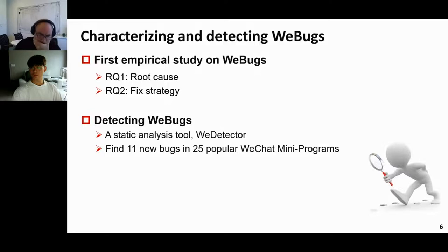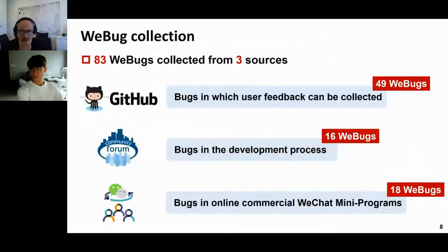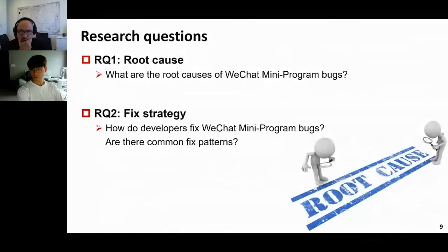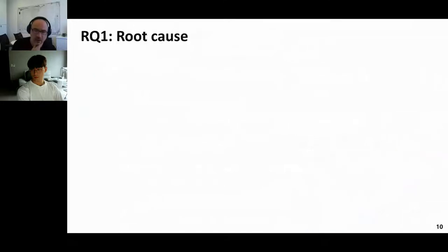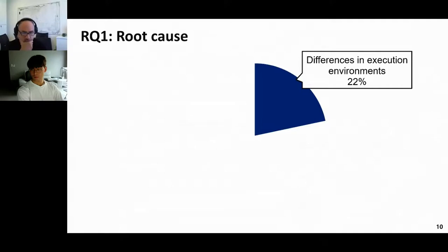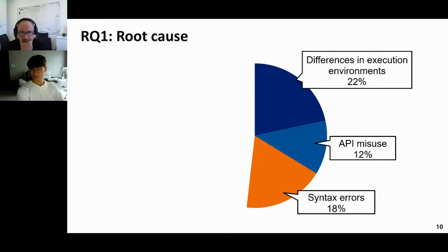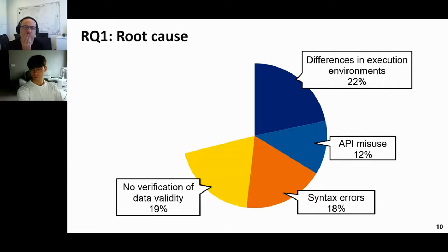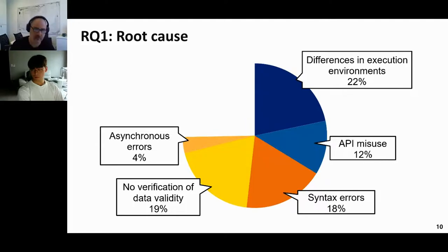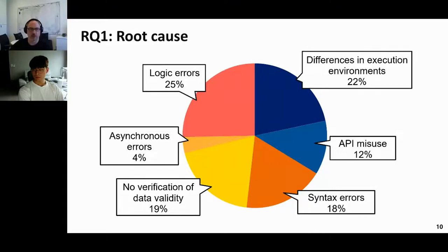Based on the bug patterns summarized from our empirical study, we propose a static analysis tool called V-detector, which found 11 new bugs. We collected 83 bugs from three sources: GitHub, the official developer forum, and online commercial WeChat mini-programs, covering various stages of development. We address two research questions: root causes and fix strategies. We identified six types of root causes: differences in execution environments, API misuse, syntactic errors, developers assuming external request data meets expectations without validity checks, asynchronous errors due to the event-driven mechanism, and logic layer bugs.